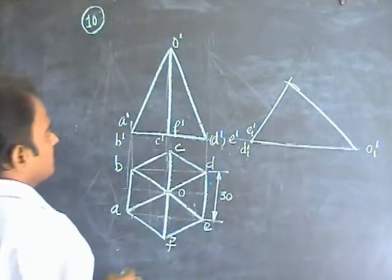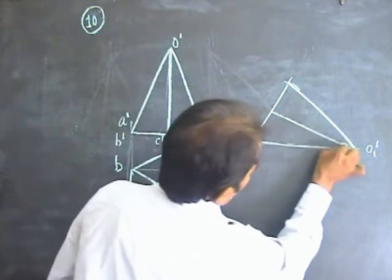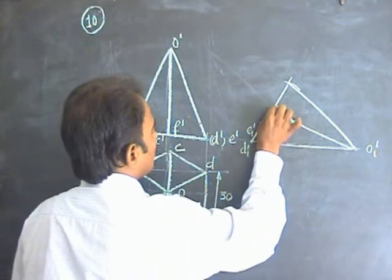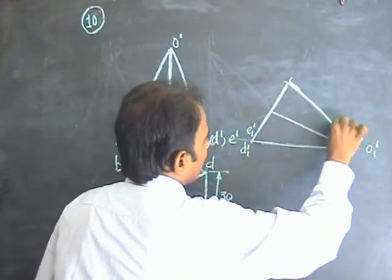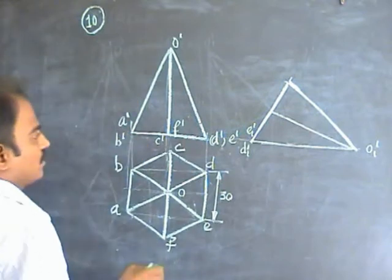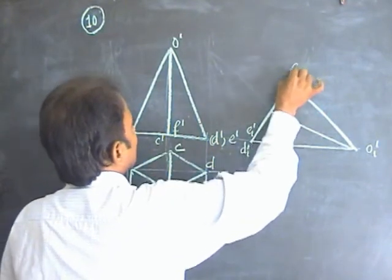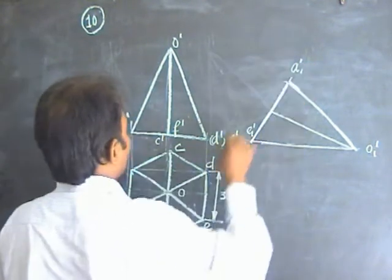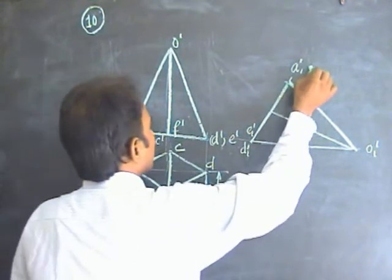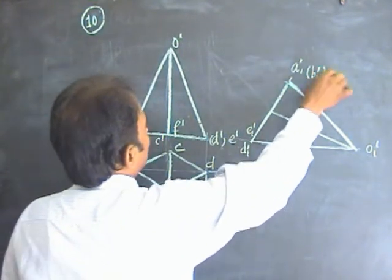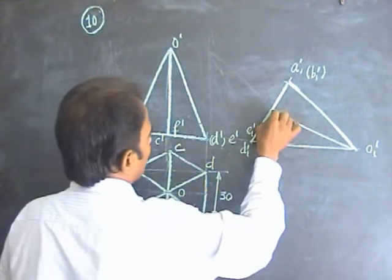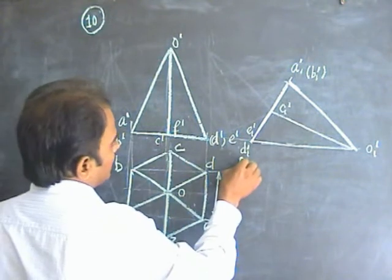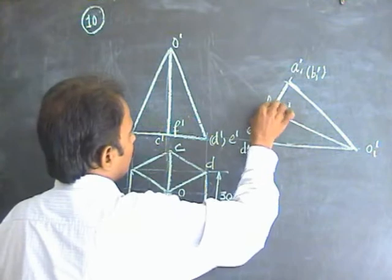In this position you have the hexagonal pyramid resting on the ground with one of its triangular faces on HP. Name this point — this is A dash. Then A dash is visible, D dash is visible, and F dash is visible.